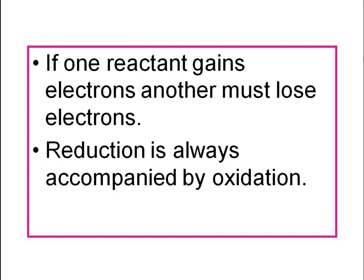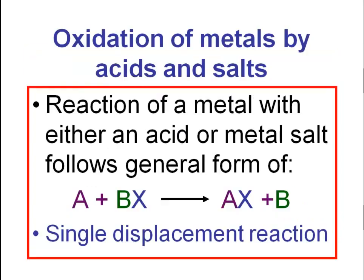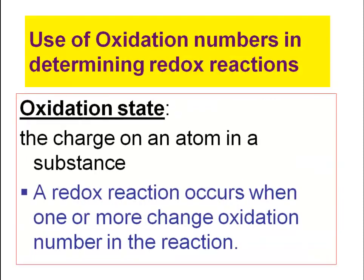They will always be together, so a lot of times I will use the shortened version of oxidation-reduction and just call them redox reactions. The reaction of a metal with either an acid or a metal salt follows the general form A + BX → AX + B — a single displacement reaction — and this will be an oxidation-reduction reaction.